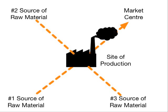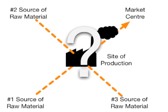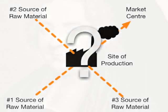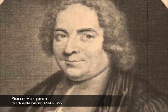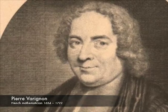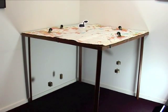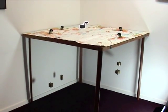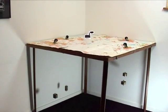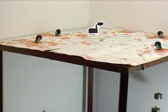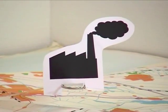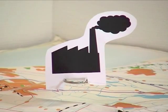Now that would be very easy, but this is a more realistic version. Suppose we've got three raw materials and we want to determine the optimal location of the firm. Where would this optimal location be? Well, this French mathematician Pierre Varignon thought about this problem and invented the Varignon frame. Here the factory indicates the optimal location where the transportation costs are minimum.